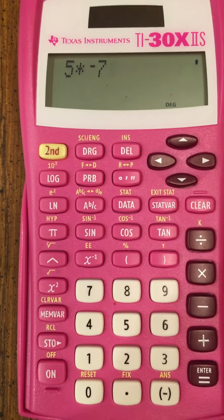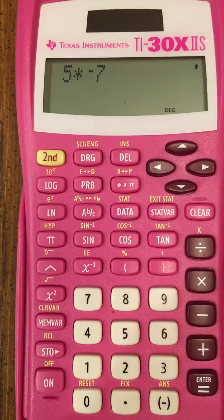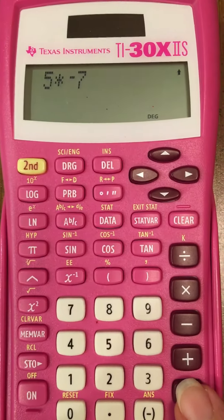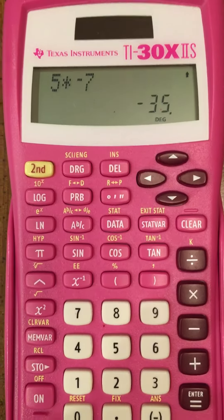All right? Well, I know 5 times negative 7 is negative 35. And if you hit equal, which you can, it'll show you it's negative 35.